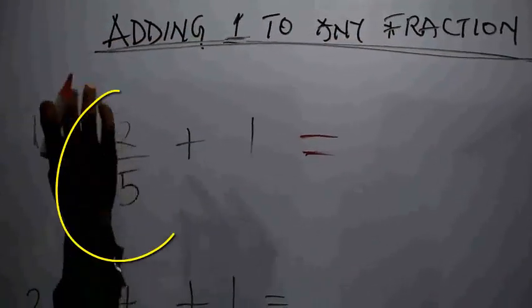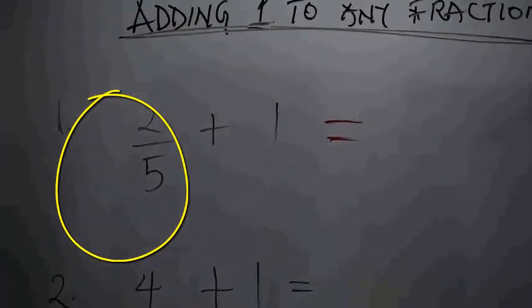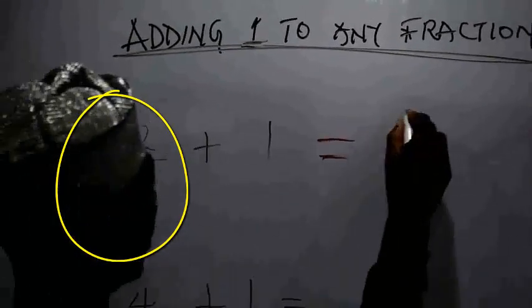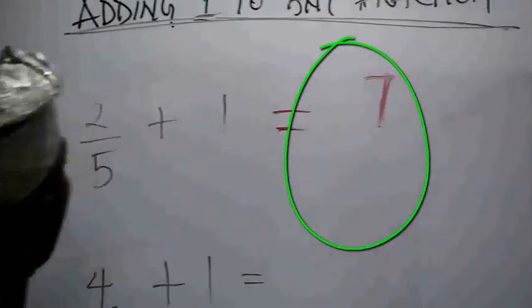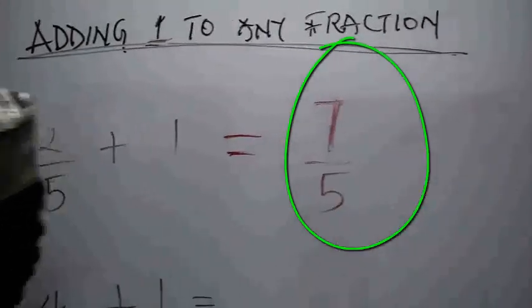The numerator is 2, denominator is 5. Sum of 2 and 5 is 7. So that's 7 over 5.